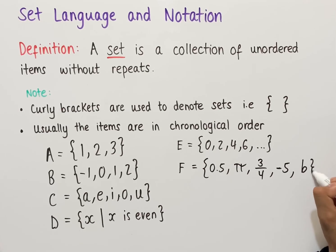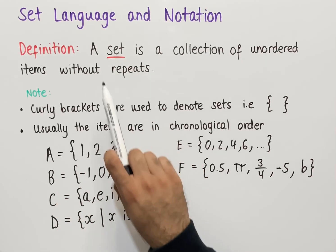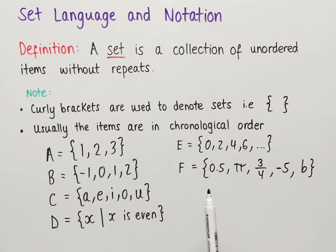We could have, for instance, 0.5, π, 3/4, -5, and the letter b, and this would still be a valid set. Likewise, we could have words, negative numbers, and so on. As long as our definition of a set is satisfied, we could have all sorts of different sets.